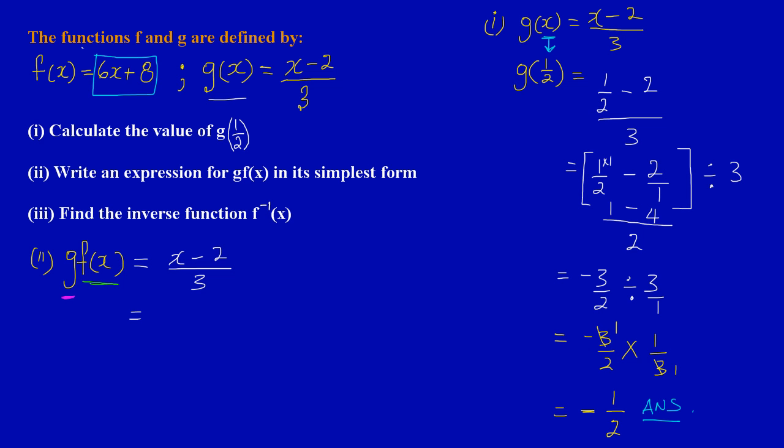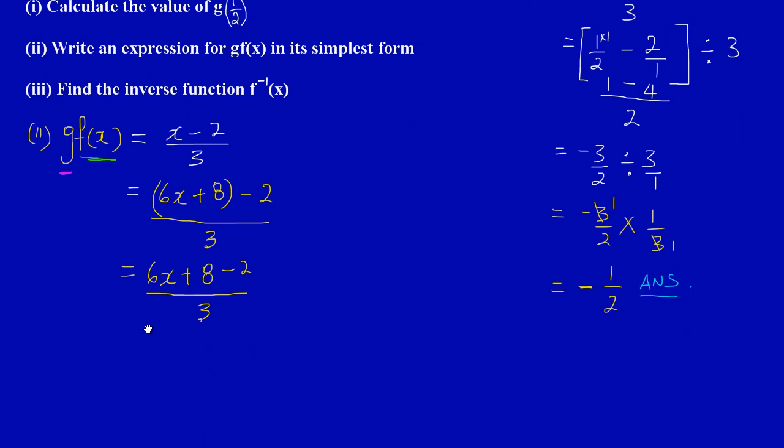Whatever f(x) is now, I'm going to replace x and put f(x) there. Where x is, I'm going to change that and put this function, which is f(x) = 6x + 8. So here now I would have f(x) = 6x + 8 in brackets to show it represents x, and I'm subtracting 2, all upon 3.